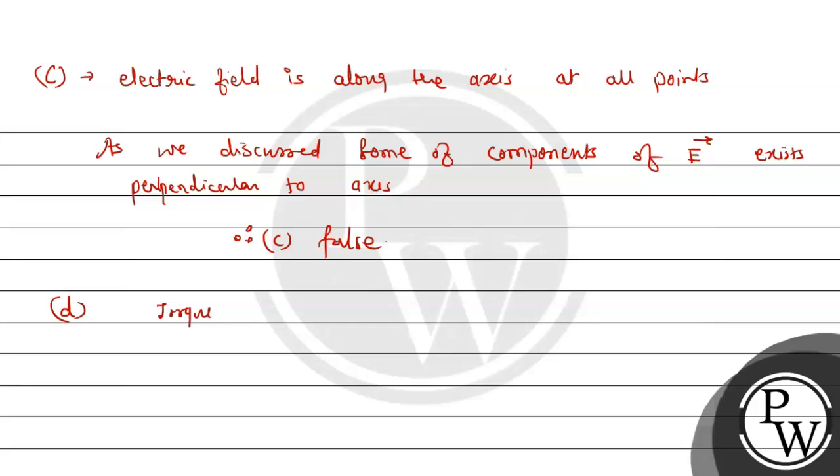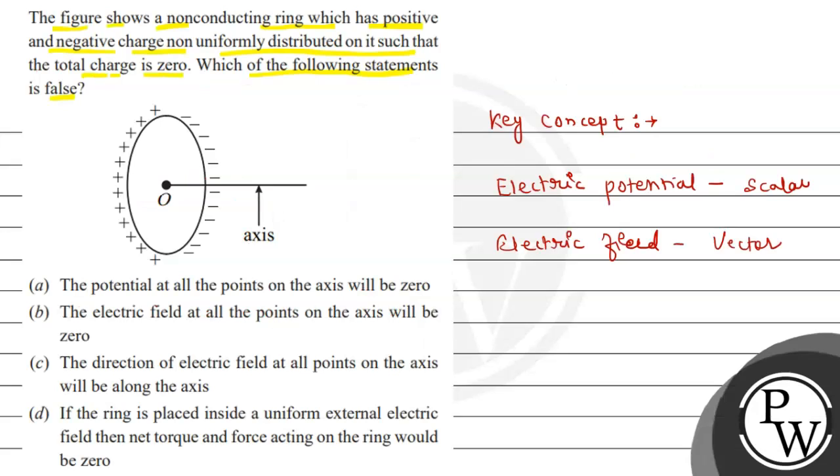For option D, torque is zero and net electric field is also not going to happen. So the options we can tell: option A is true, and options B, C, and D are false. I hope you understood it well, best of luck, thank you.